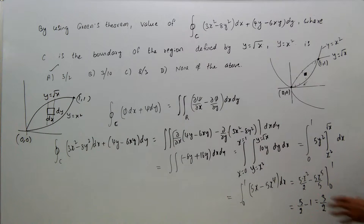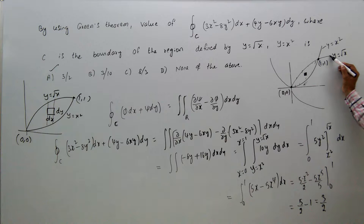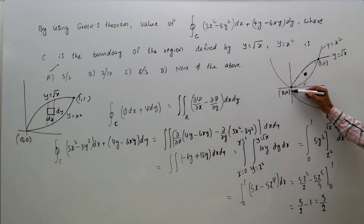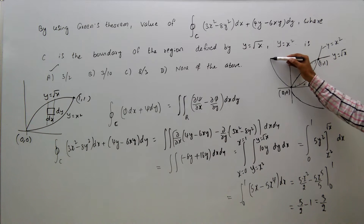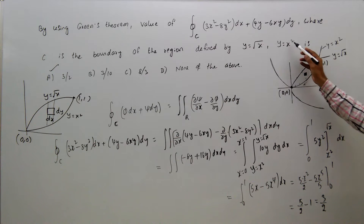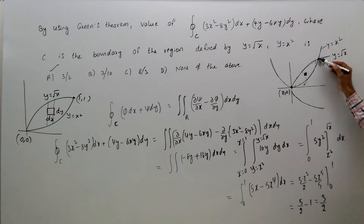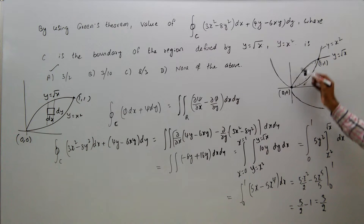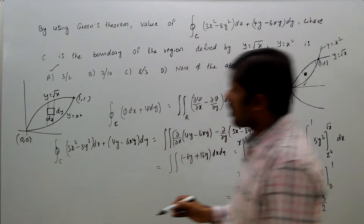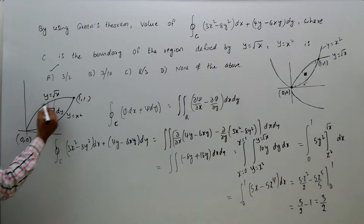So we have the double integral of 10y dy dx. For the limits of integration, we examine the region bounded by y = √x and y = x². These two curves intersect at (0, 0) and (1, 1). The region between them is shown: y = x² is the lower parabola and y = √x is the upper curve.